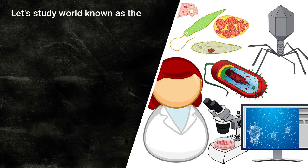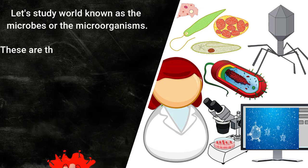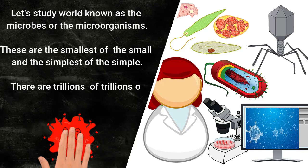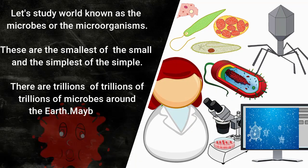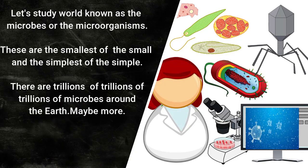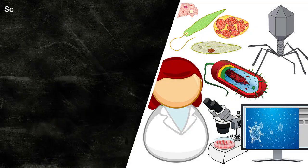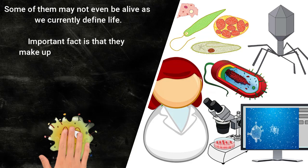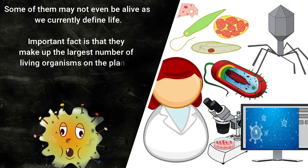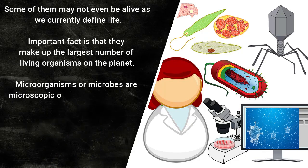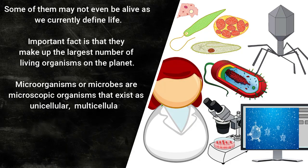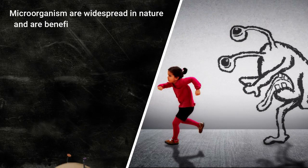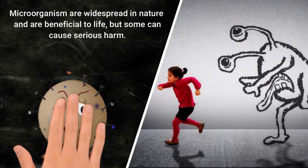Let's study the world of microbes, or microorganisms — these are the smallest of the small and the simplest of the simple. There are billions of trillions of microbes around the earth, maybe more. Some of them may not even be alive as we currently define life. An important fact is that they make up the largest number of living organisms on the planet. Microorganisms exist as unicellular, multicellular, or cell clusters, and while widespread and beneficial to life, some can cause serious harm.